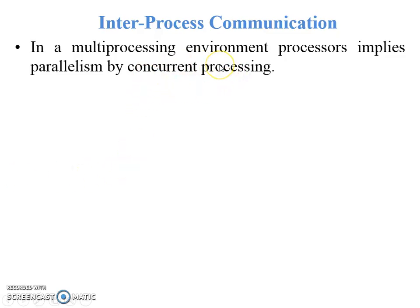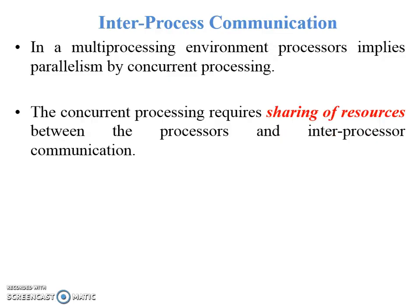Concurrent processing means there are more than one process executed simultaneously, either in the same processor or in different processors. One process execution is going on and before it completes, a second process will start — this is called concurrent processing. Concurrent processing requires sharing of resources between the processors and inter-processor communication.